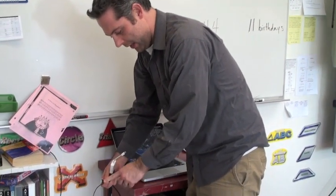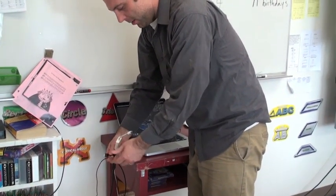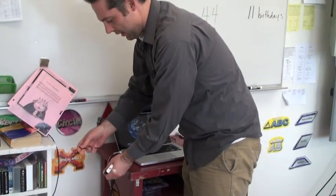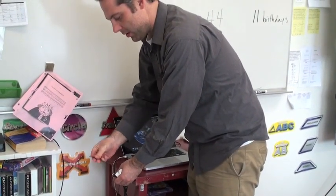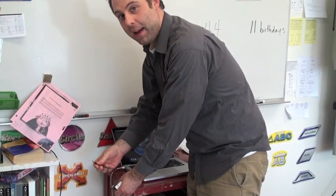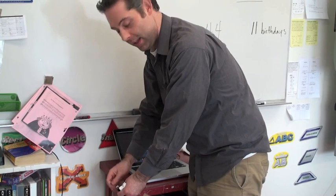the USB cord, which is the rectangular wider one, and that connects the smart board to the computer, and the last one is, depending on which classroom you use, what looks like a headphone cord, and that connects the sound from your computer into the speakers in the classroom.